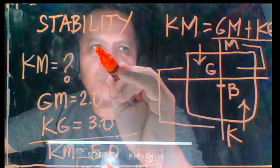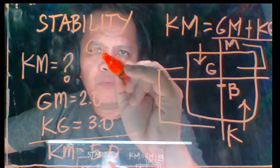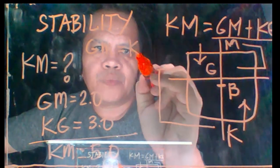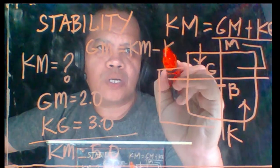There's a lot of combinations. If you look for GM, then you have already the KM, you just minus the KG.